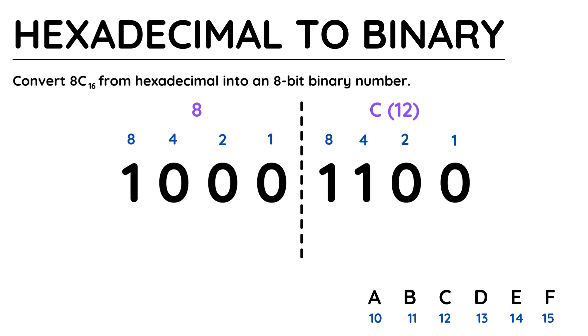Representing 12 is also quite straightforward as it is 8 plus 4, so it's a 1 beneath those values and a 0 beneath the 2 and the 1. And that's it, 8C in hexadecimal is equal to 1, 0, 0, 0, 1, 1, 0, 0 in binary.